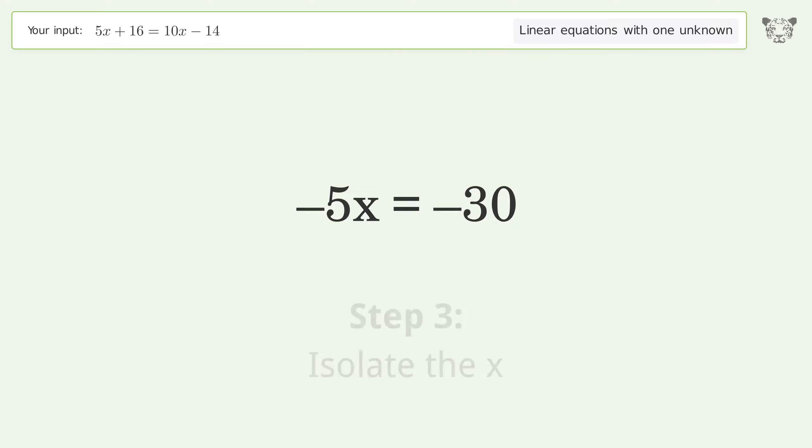Isolate the x. Divide both sides by negative 5. Cancel out the negatives. Simplify the fraction.